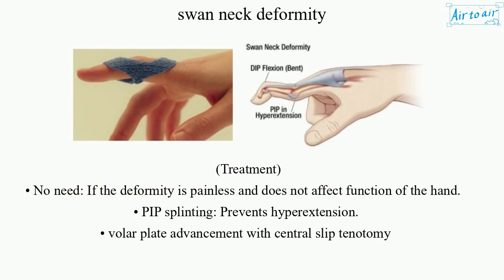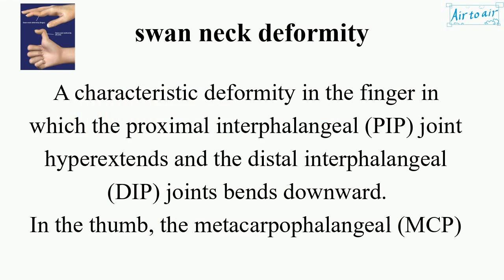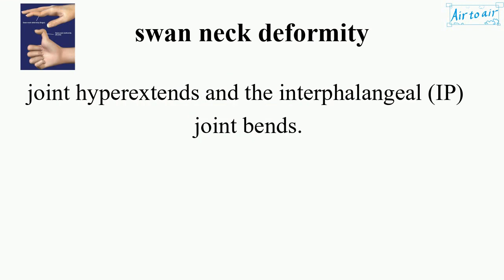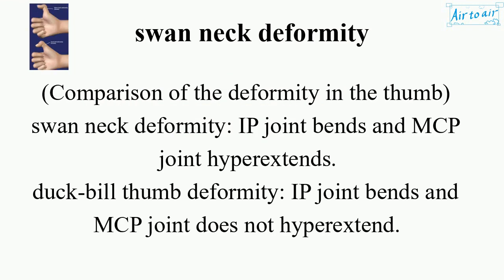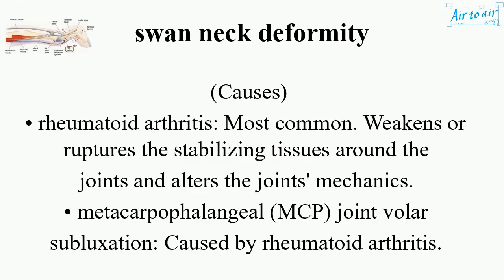Treatment: No treatment needed if the deformity is painless and does not affect function of the hand. PIP splinting prevents hyperextension. Surgical options include volar plate advancement with central slip tenotomy.